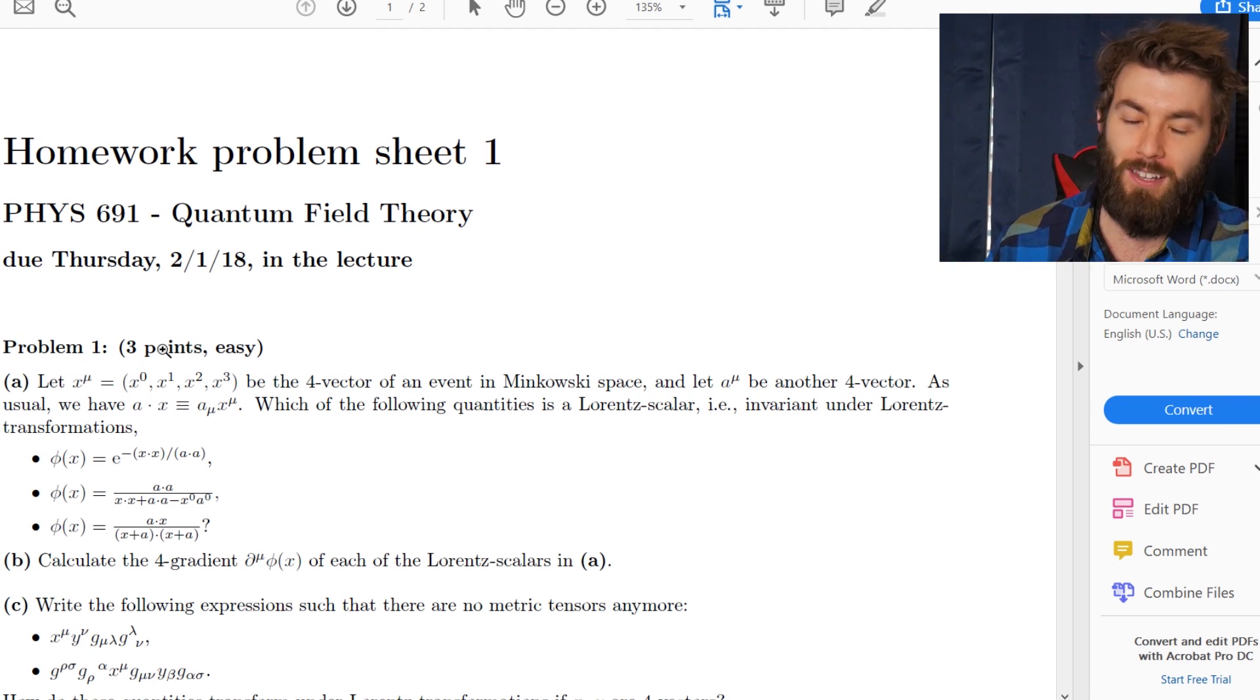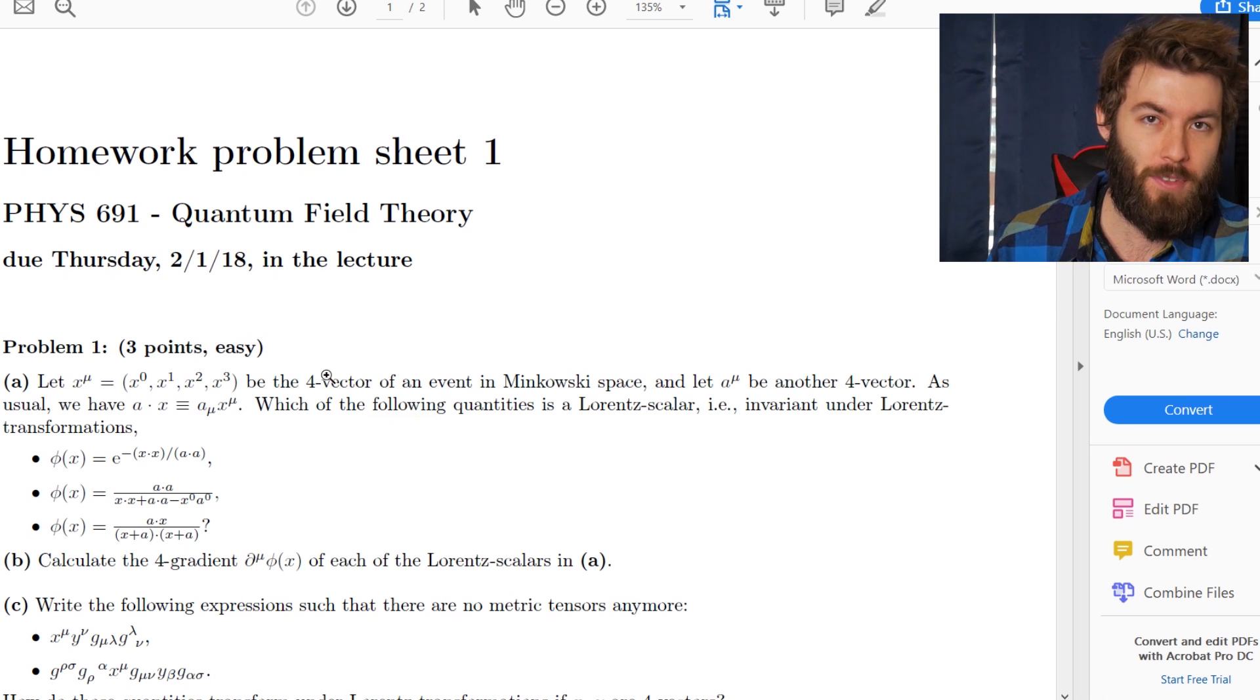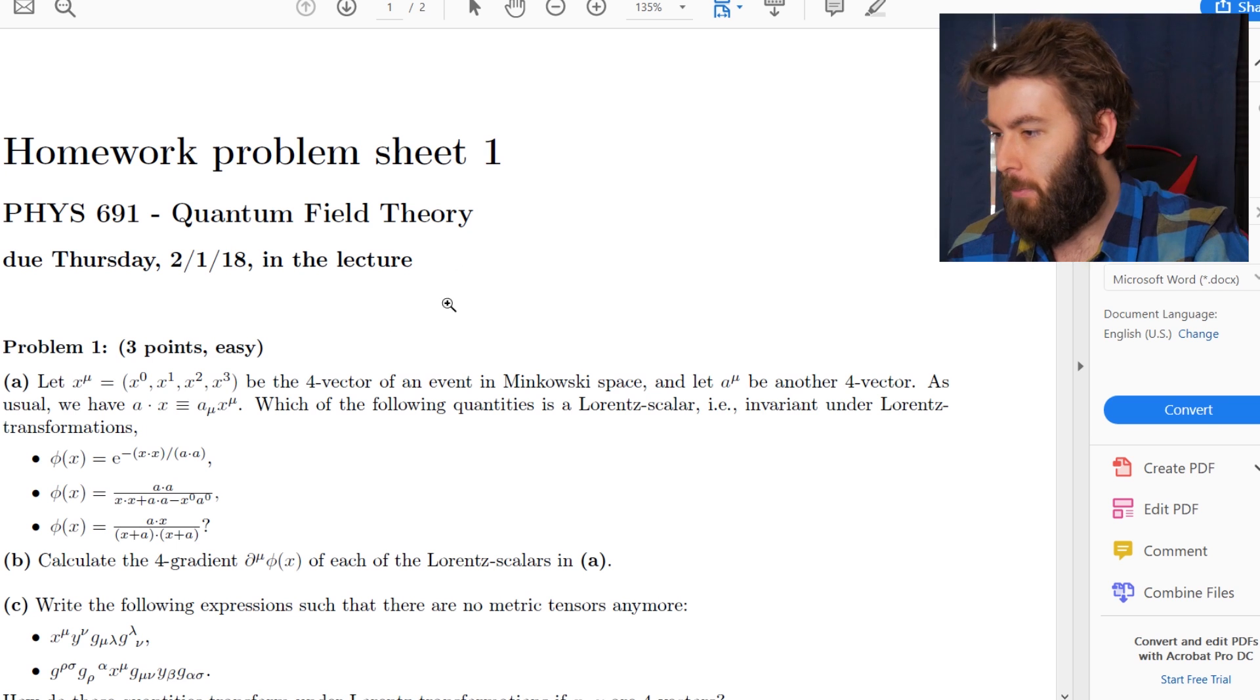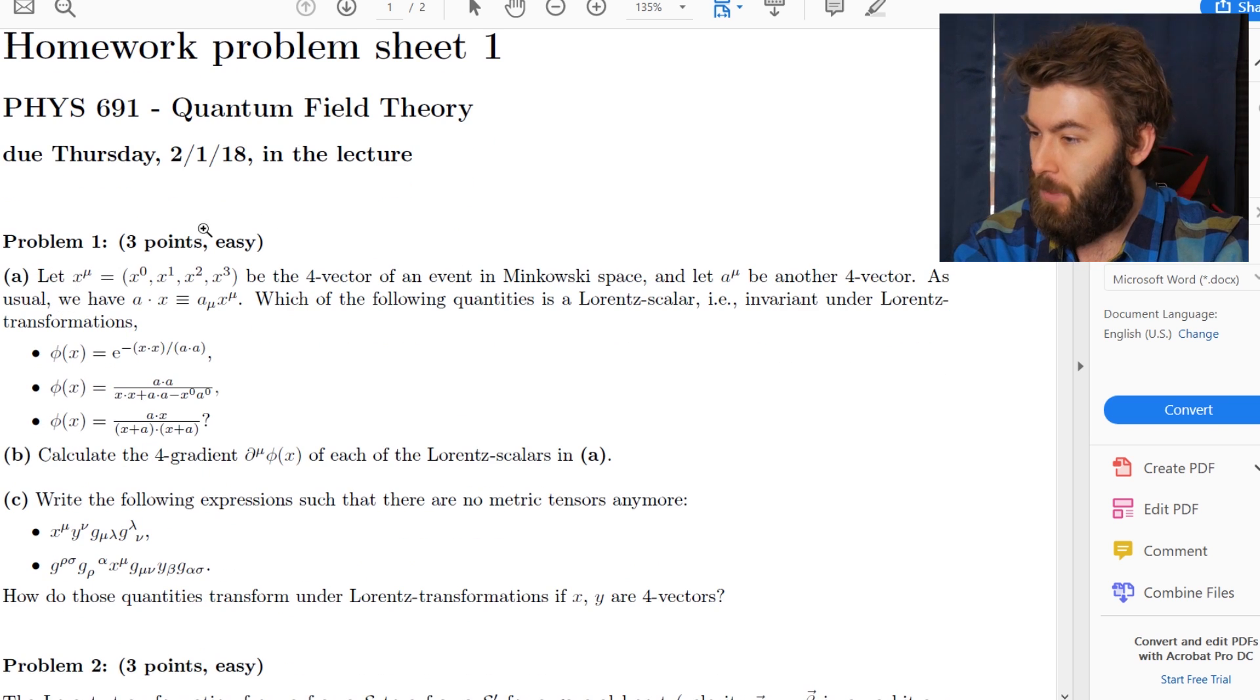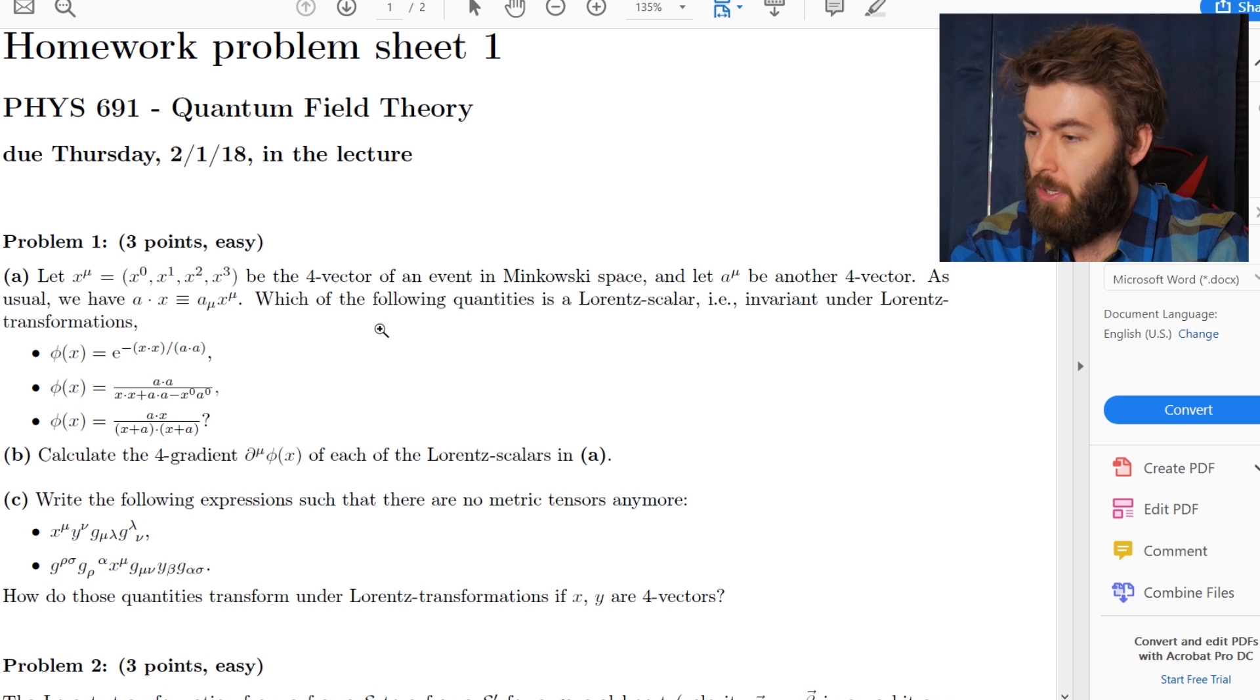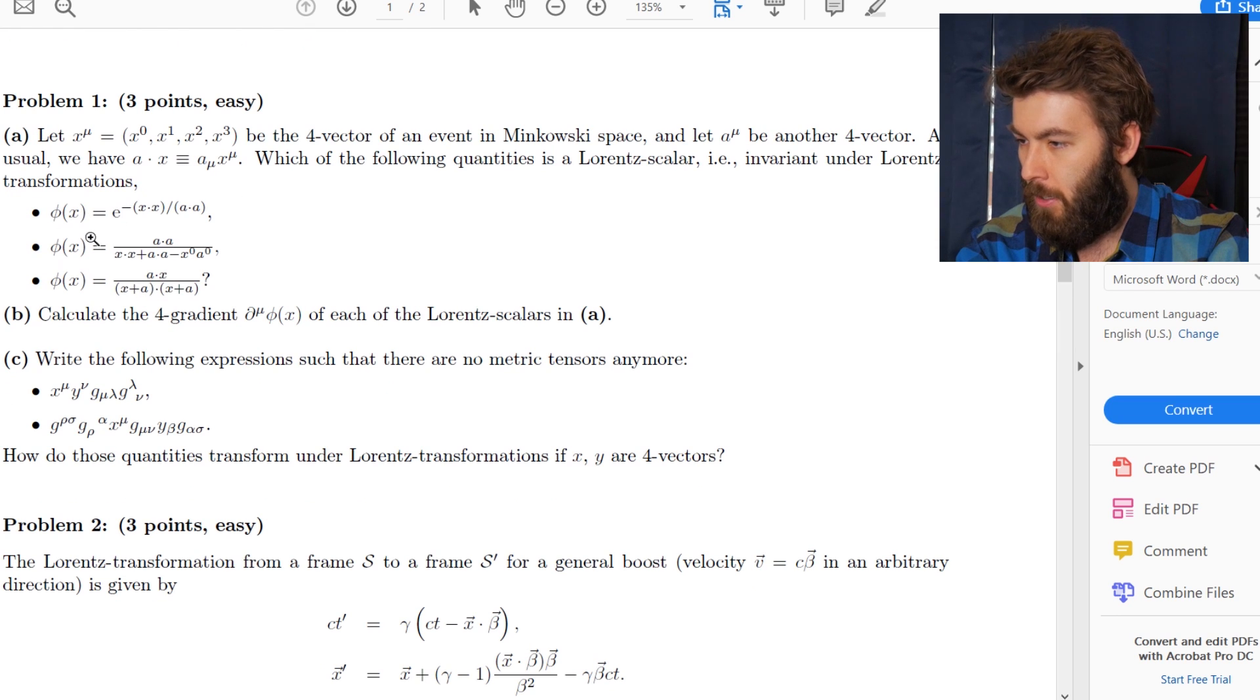So the first problem, by the way, I like how he lets you know how hard it is. The first one, let x mu be this four vector in Minkowski space and let a mu be another four vector, defining the dot product between them, which of the following quantities is a Lorentz scalar, invariant under Lorentz transformation. Shouldn't be hard at all.